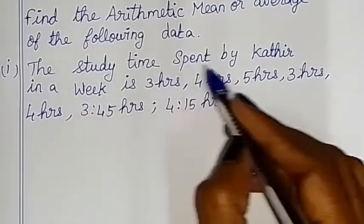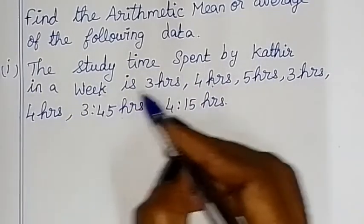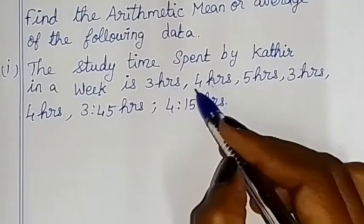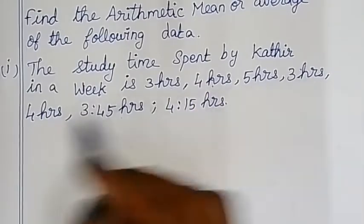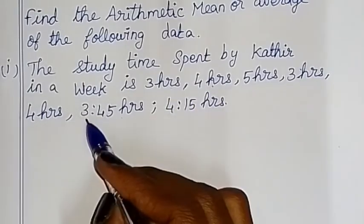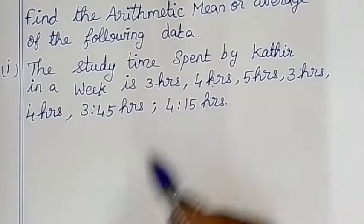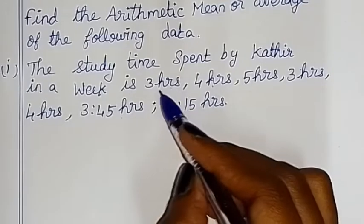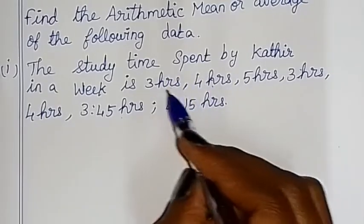The study time spent by Kadir in a week is: 3 hours, 4 hours, 5 hours, 3 hours, 4 hours, 3 hours 45 minutes, and 4 hours 15 minutes. Seven days — one week is 7 days.